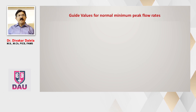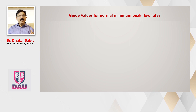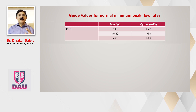I hope you understood how to interpret flow time and voiding time, and how to interpret Q-max and average flow rate in these graphs. Having understood that, let me also tell you there are some variations as per age and sex. For men in different age groups, we have an acceptable range of Q-max.